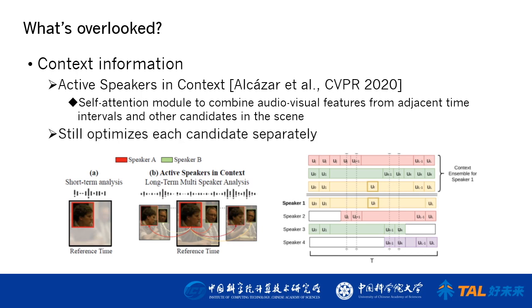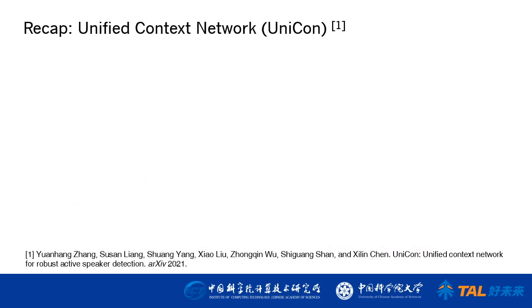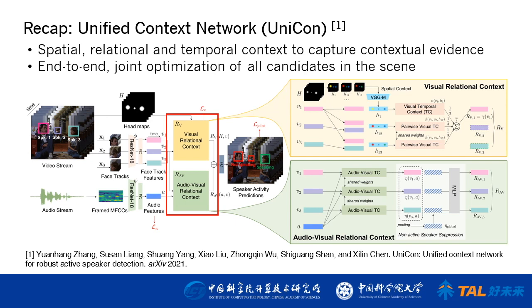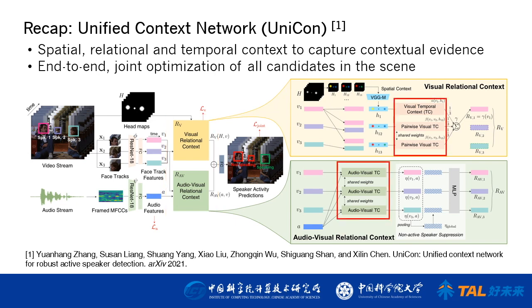One interesting previous work — and last year's winning solution — is the Active Speakers in Context model, which combines audio-visual features from adjacent time intervals and other candidates in the scene to improve local predictions. However, this method still focuses on optimizing each candidate separately. Our submission is based on a novel Unified Context Network, or UNICON, which leverages multiple sources of contextual information to analyze all speaker candidates simultaneously. First, the scale and position of candidates' faces are introduced as global spatial context to complement facial information and help identify relationships among speakers. Each candidate is then contrasted with others from both visual and audio-visual perspectives, and temporal context is incorporated to further improve temporal consistency.